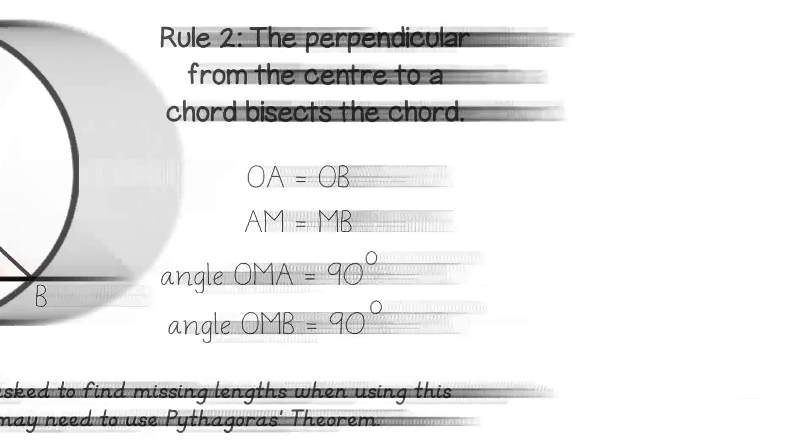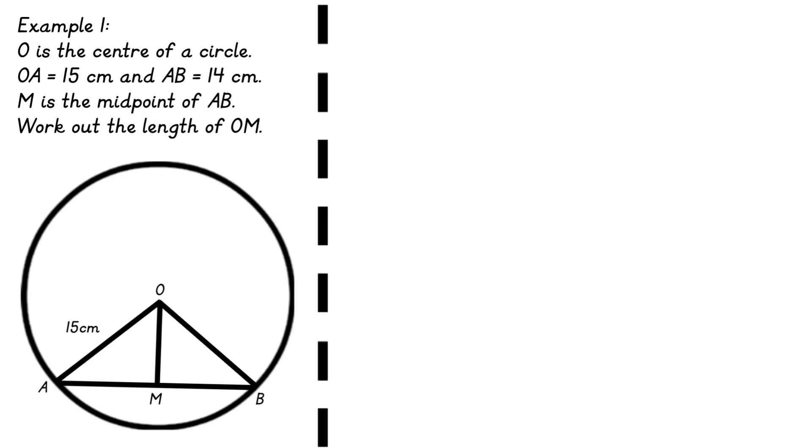So let's apply this rule to this exam question. So O is the centre. I've got my radii which is OA and OB so I can put in 15 centimetres straight away. I've also been told in the question M is the midpoint and A to B is 14 centimetres. So half of that is 7. So I now know that A to M is 7 and M to B is 7. So I've labelled it as much as I can.